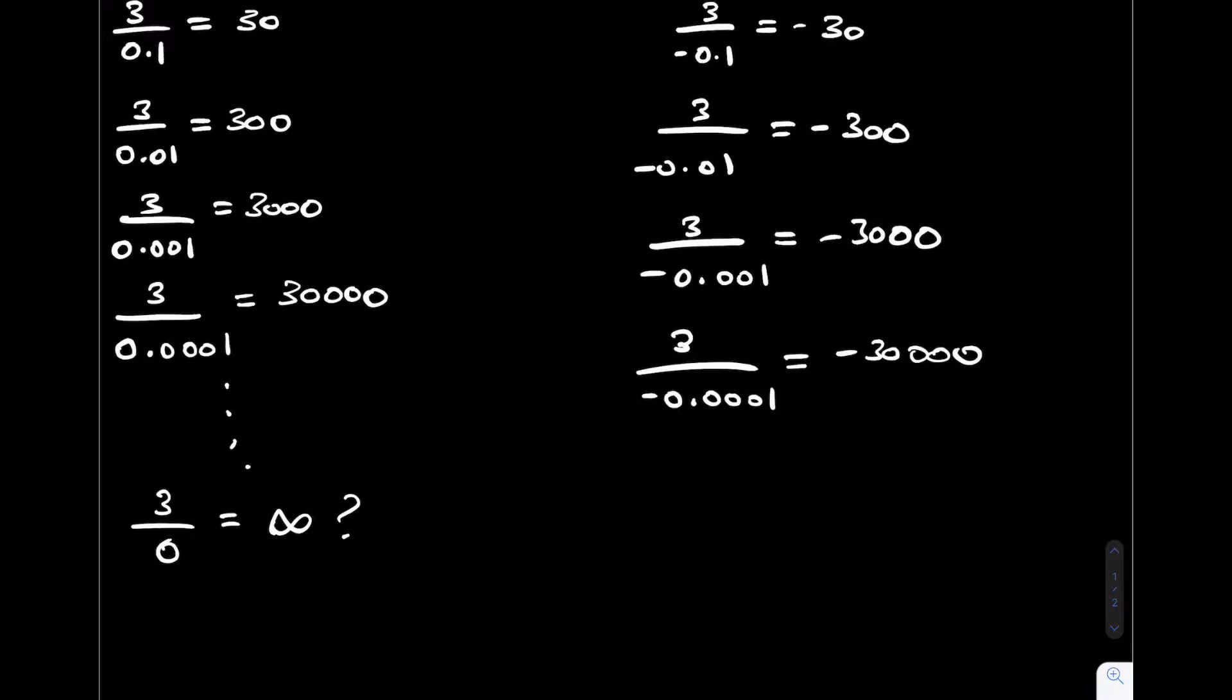So perhaps now I can generalize and write down that 3 divided by 0 will equal negative infinity.